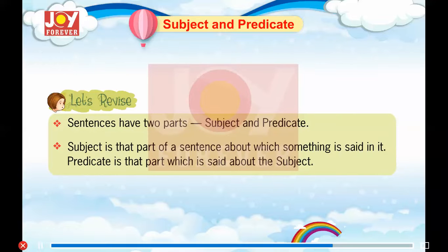Let's revise. Sentences have two parts: subject and predicate. Subject is that part of a sentence about which something is said in it. Predicate is that part which is said about the subject.